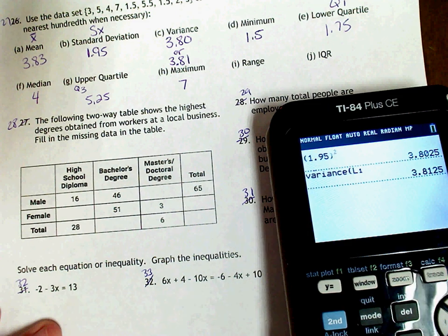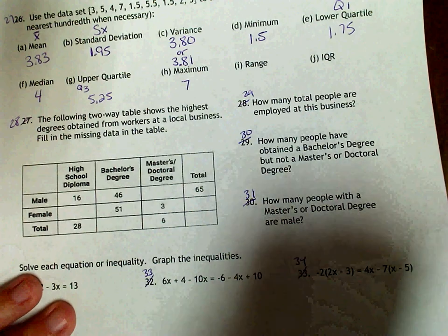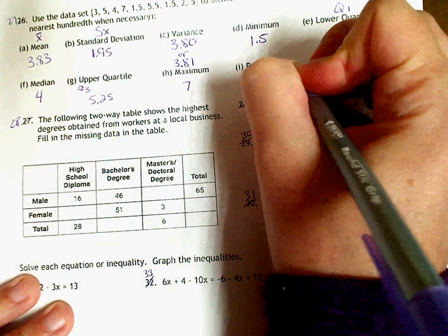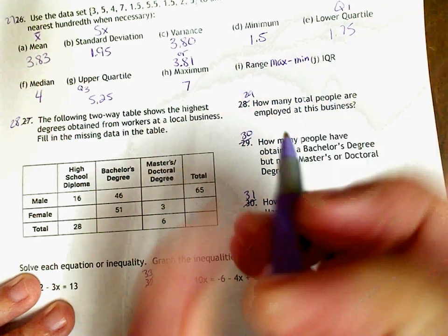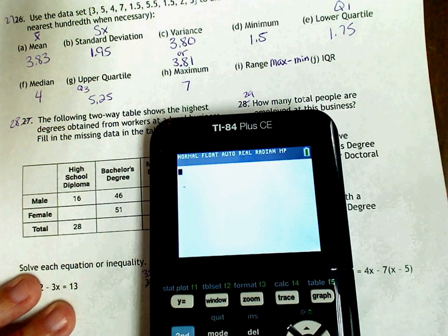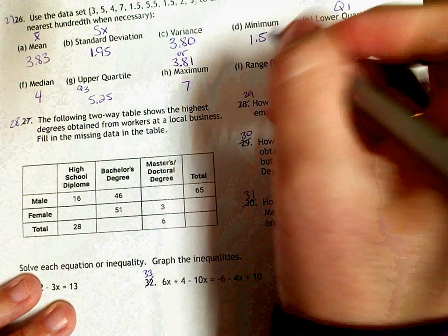Alright. Then to find the range. Range is your maximum minus your minimum. So I'm going to write max minus min. And your maximum is 7. And your minimum is 1.5. So we get 5.5. So your range is 5.5.